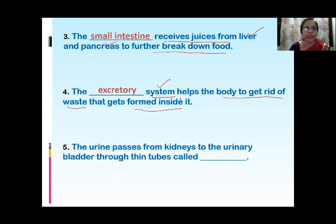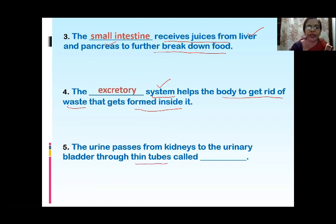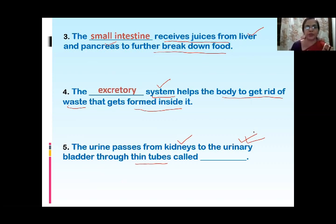The next question: the urine passes from kidneys to the urinary bladder through thin tubes called Dash. You have to tell the name of the thin tubes which connect the kidneys to the urinary bladder — arising from the kidneys and opening into the urinary bladder. The name of these thin tubes is ureters.